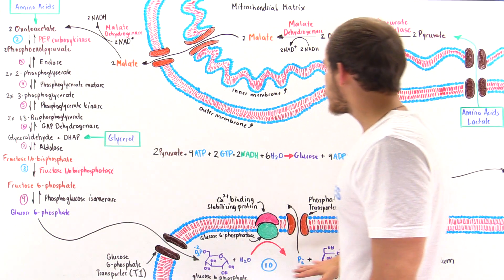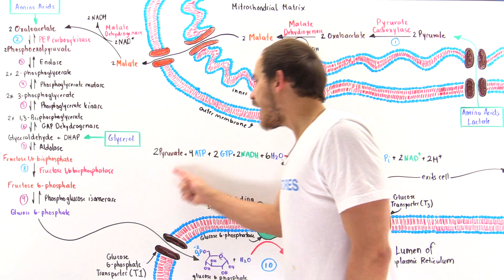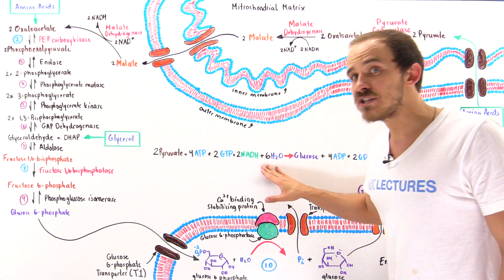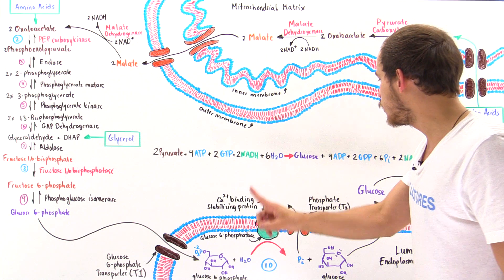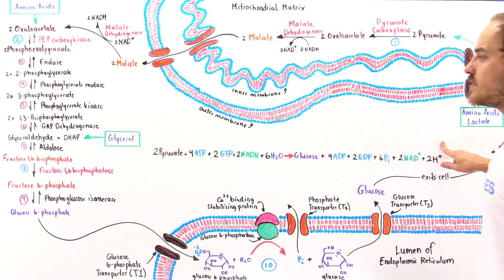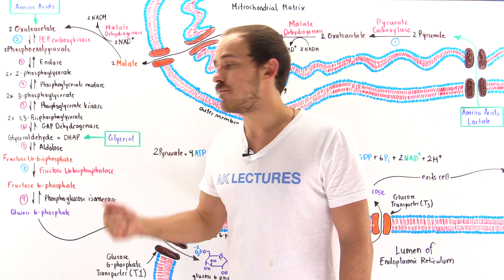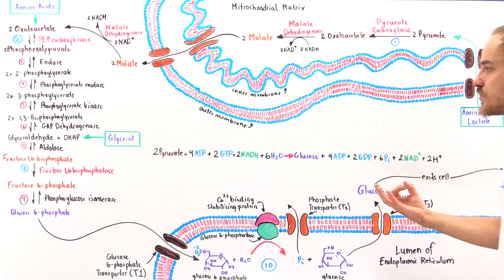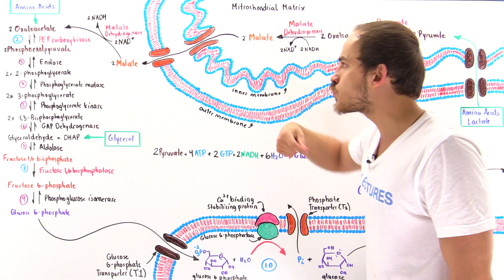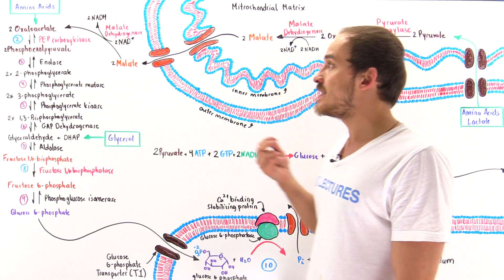If we sum up all the individual steps described, this is the net reaction: in gluconeogenesis, 2 pyruvate molecules, 4 ATP molecules, 2 GTP molecules, 2 NADH molecules, and 6 water molecules are used to produce a single glucose, 4 ADP, 2 GDP, 6 orthophosphates, 2 NAD⁺, and 2 H⁺. Under normal physiological conditions, this is an exergonic reaction. Basically, we use the hydrolysis of these high-energy molecules to drive all the unfavorable processes, so that at the end, the reaction takes place spontaneously, quickly, and effectively inside the cells of our body.